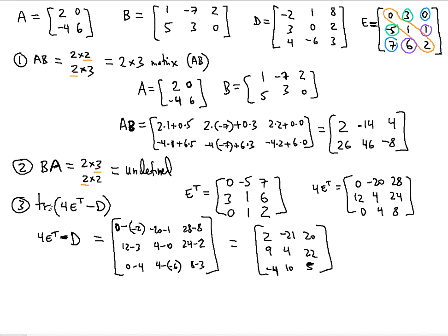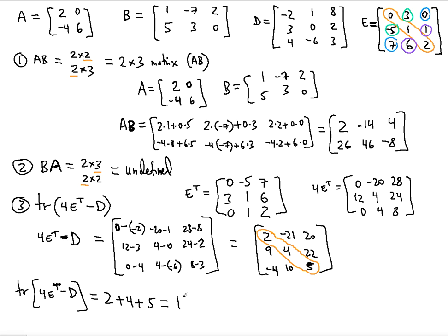Now find the trace of that matrix, which is the sum of entries on the main diagonal. The main diagonal entries of our result are 2, 4, and 5. So the trace equals 2 plus 4 plus 5, which is 11. There you go — you just solved three types of matrix problems, one of them being undefined. Thank you for watching, see you in the next video.